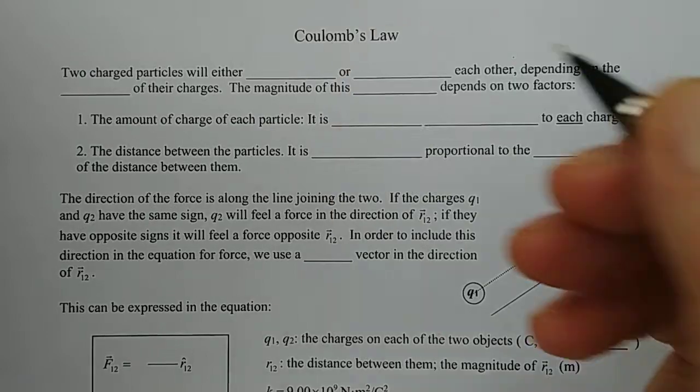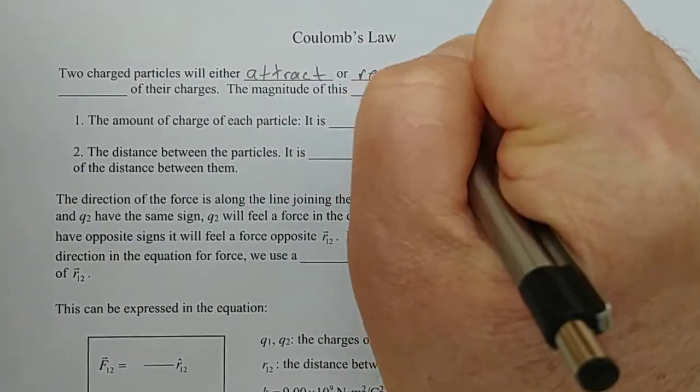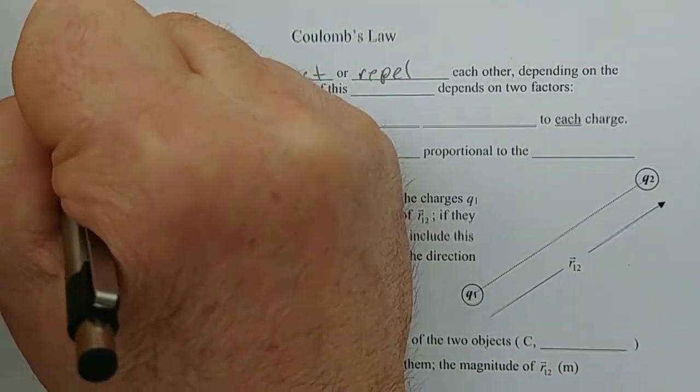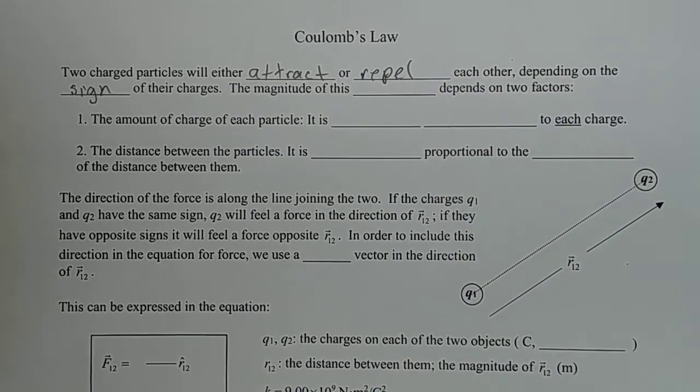Two charged particles will either attract or repel each other. We know this. Depending on the sign of their charges, if they are both the same sign they will repel. If there are different signs they will attract.